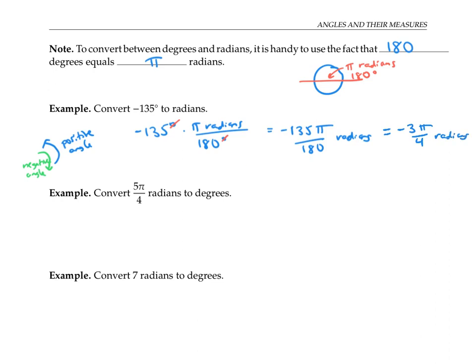Or if I convert pi to a decimal, that's negative 2.3562 radians up to four decimal places. But usually, if the answer is a simple fraction times pi, it's better to leave it in that form rather than convert it to a decimal.